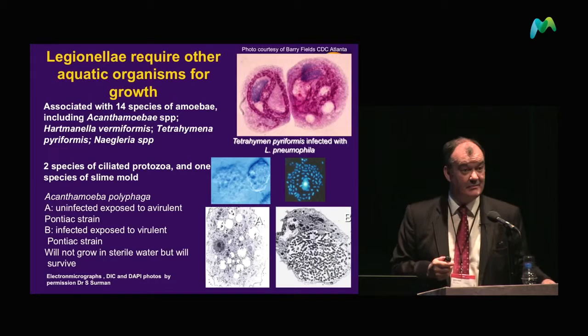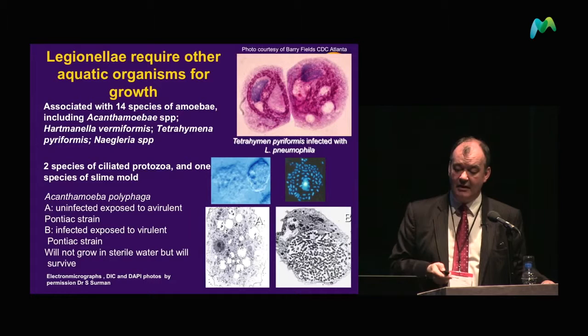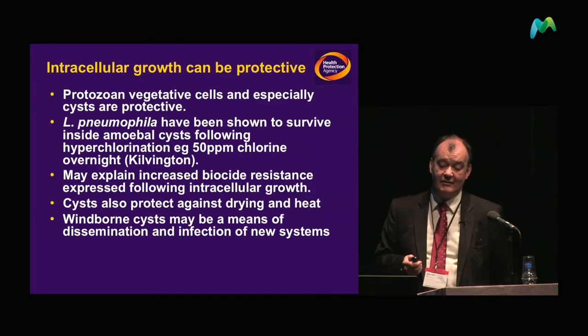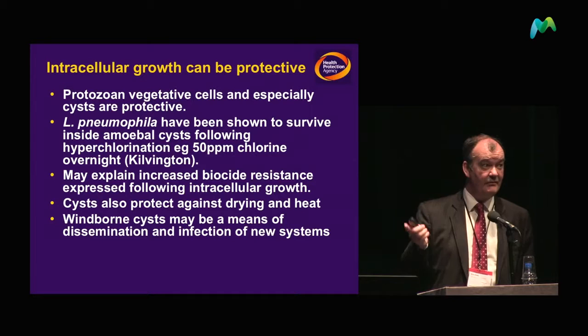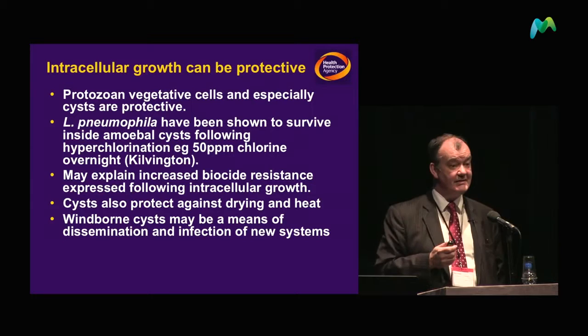These are some of the organisms in which Legionella lives. An enormous number of amoeba can support Legionella, and living within a protozoal organism is actually very protective. This is quite a challenge when trying to treat systems that are already contaminated, because Legionella can survive up to 50 parts per million of chlorine inside some of these organisms.